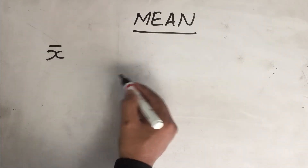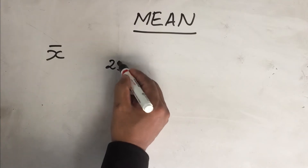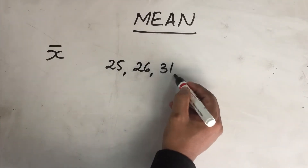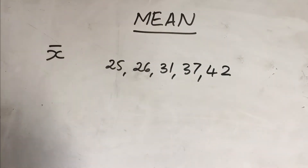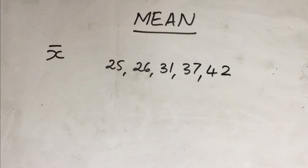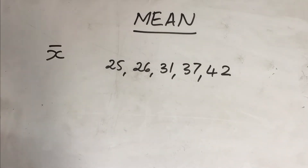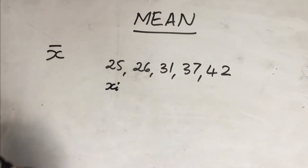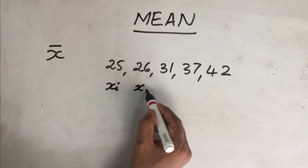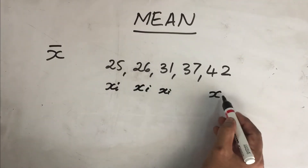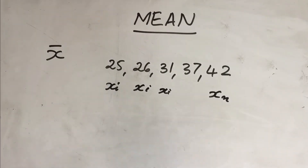The assumption is that somebody is scoring 25 marks, another person 26, 31, 37, and 42 — so there are five students. What is the average marks? Each of these values is considered to be x₁, x₂, and so on up to xₙ. Today n is 5; tomorrow it may be 50 or 500 values.